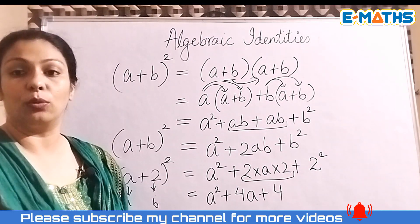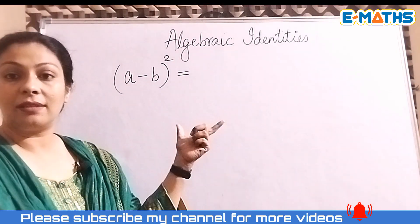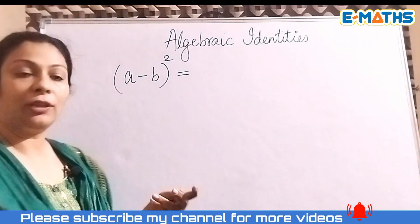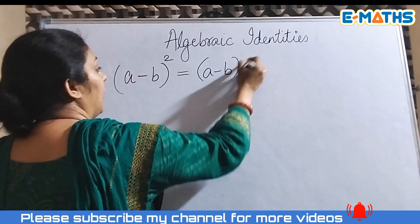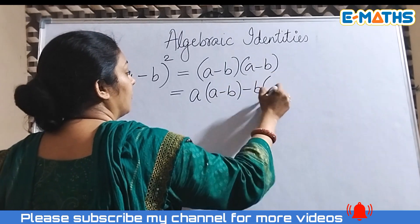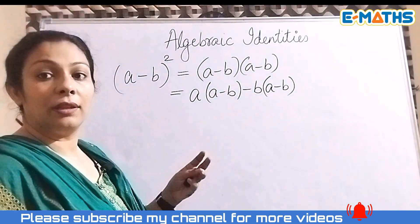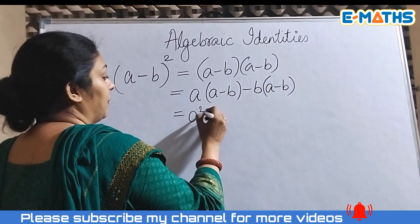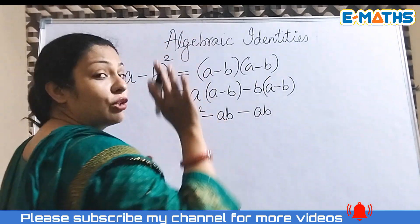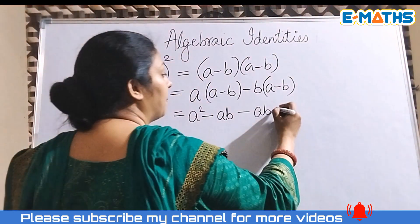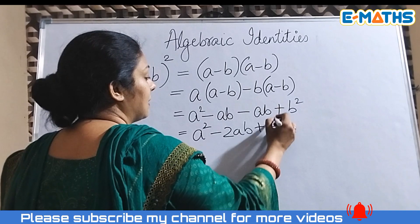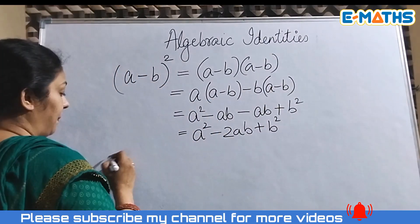Now let's talk about (a-b)². Similar to (a+b)², you multiply (a-b) by (a-b). Breaking one bracket gives: a²-ab-ab, and then minus times minus gives a positive b². Combining the like terms: (a-b)² = a² - 2ab + b².